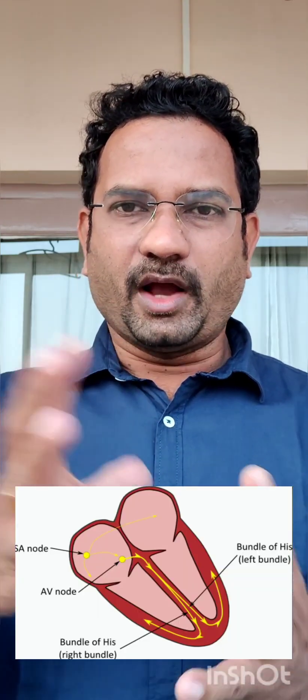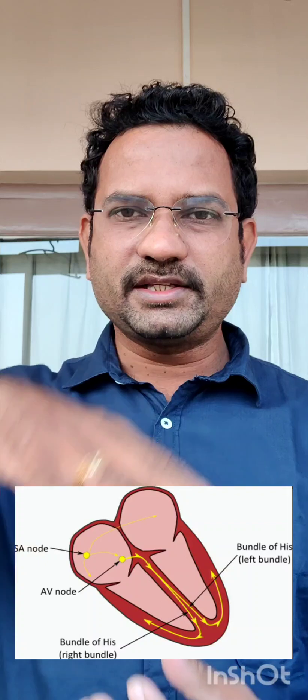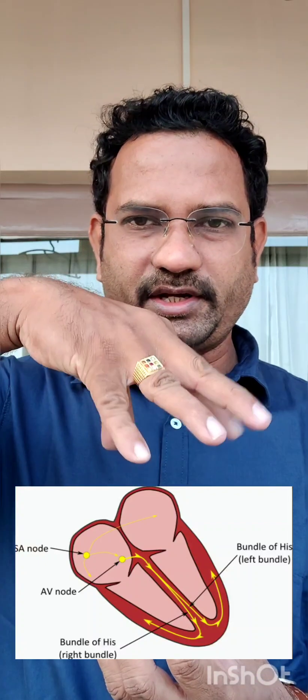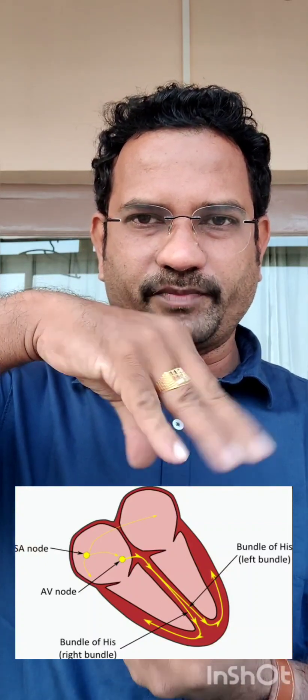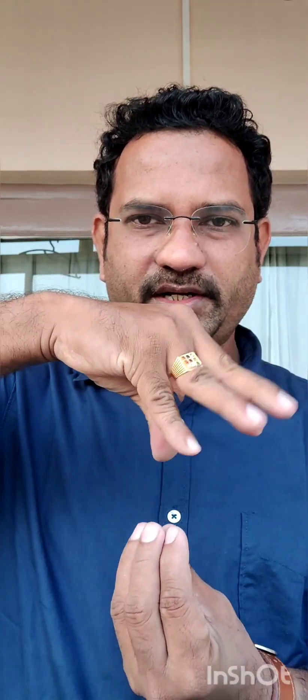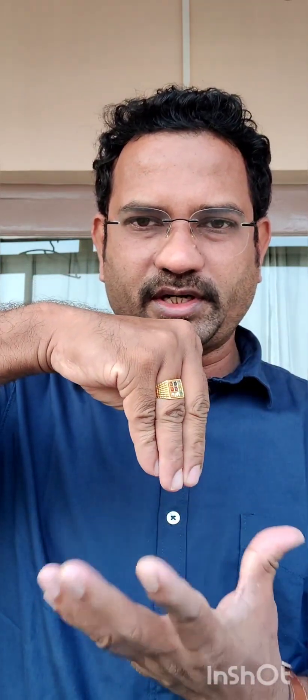Now let us understand the location of all four. The heart contracts as follows: you have the atria on the top and the ventricle at the bottom. When the atria contracts, the ventricle dilates; when the ventricle contracts, the atria dilates. This is the normal cardiac cycle — the normal rhythm of the heart.